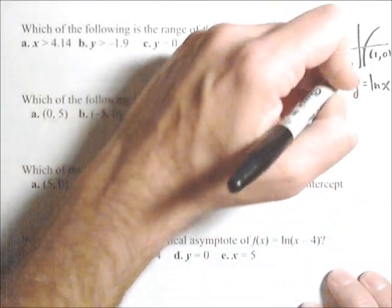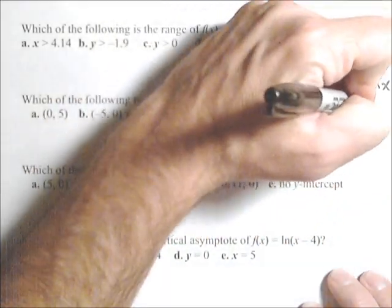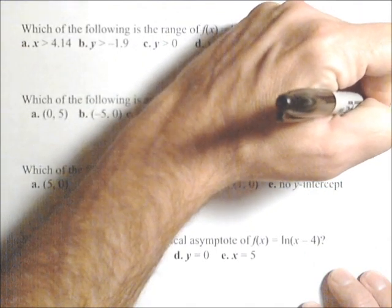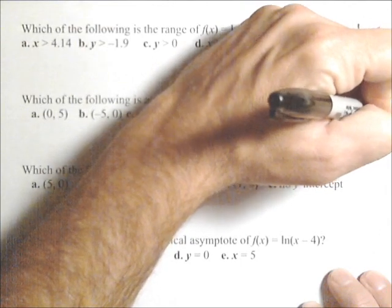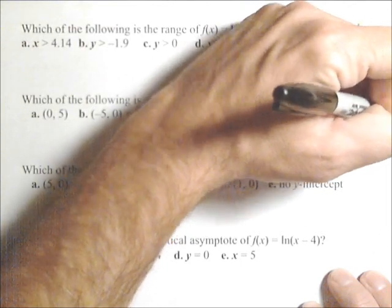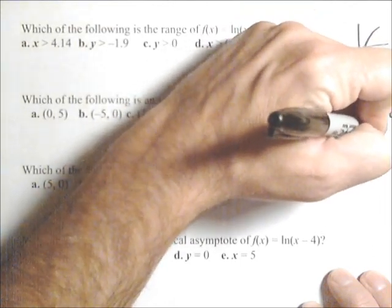Now, in general, ln of x, so this graph here, has a domain of all reals. Excuse me, not a domain of all reals. A domain of x greater than 0 and a range of all reals.